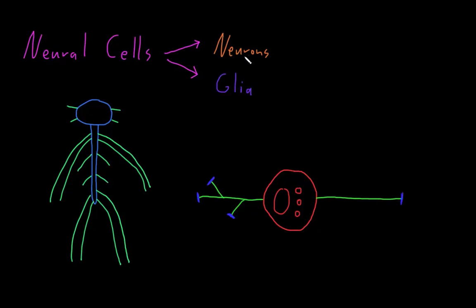The function of neurons is to process and transmit information, and the function of glia is to support them in a variety of ways.